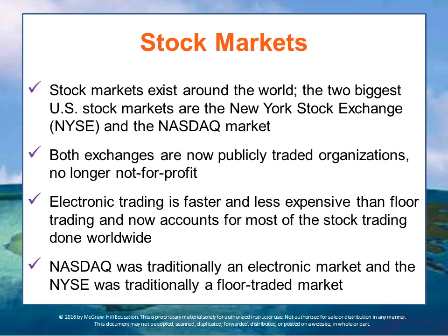There are several stock markets that exist around the world. The two biggest U.S. stock markets are the New York Stock Exchange and the NASDAQ, both of which are now publicly traded organizations and no longer not-for-profits. Electronic trading is faster and less expensive than floor trading and now accounts for most stock trading done worldwide. NASDAQ was traditionally an electronic market and the New York Stock Exchange was traditionally a floor-traded market, but there is increasingly a move towards electronic markets.